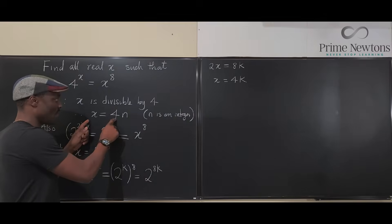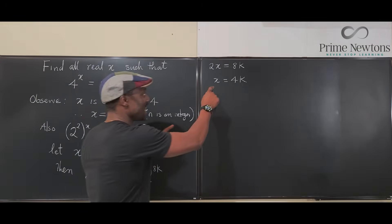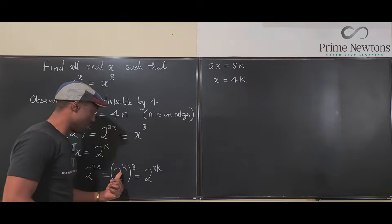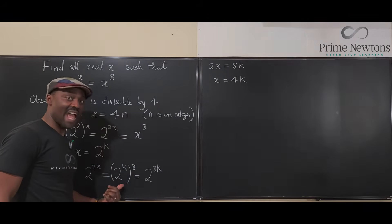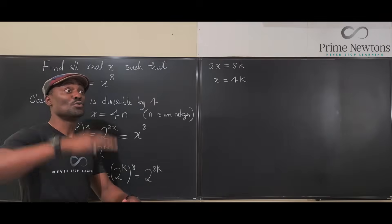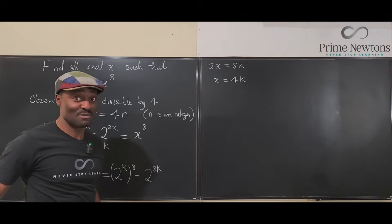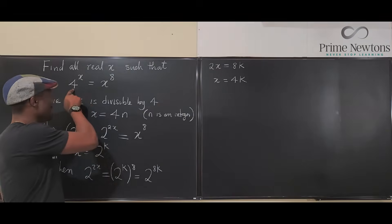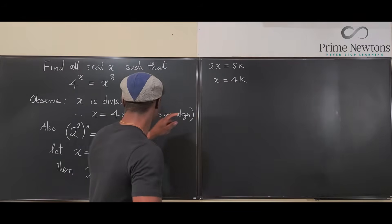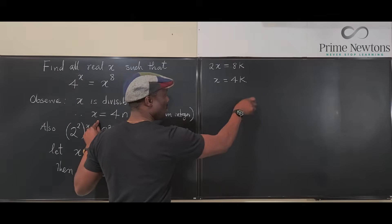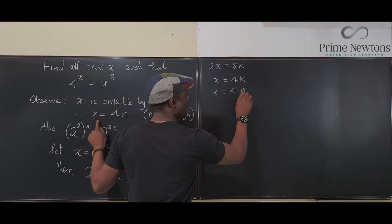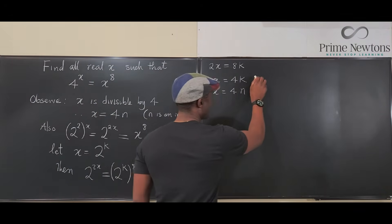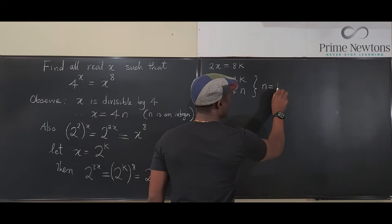So now we have two things: X equals four N because X must be a multiple of four, and X equals four K from expressing the exponents. X is purely a power of two — there can be no other base because this is four. Comparing the two expressions, N must equal K. Since X equals four N and X equals two to the K, we get two to the K equals four times N, which is four K.